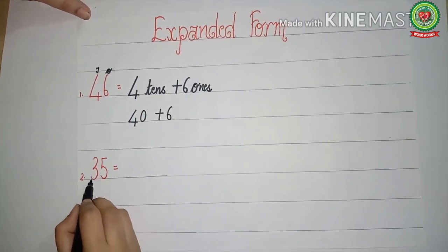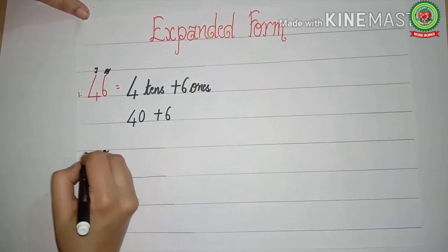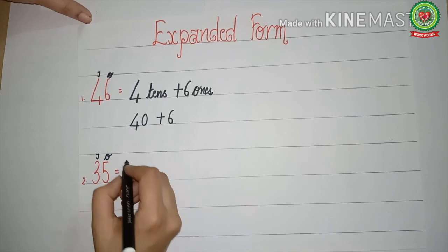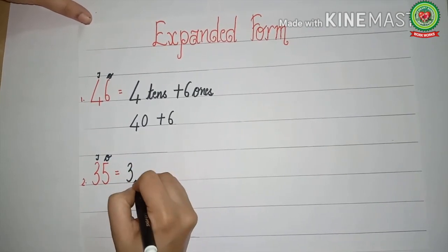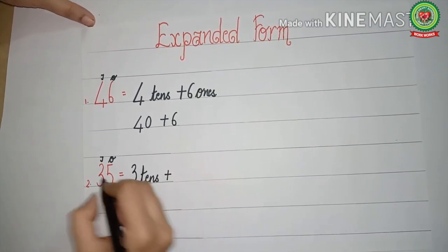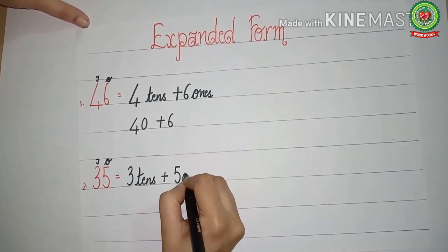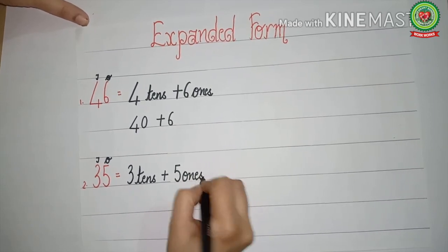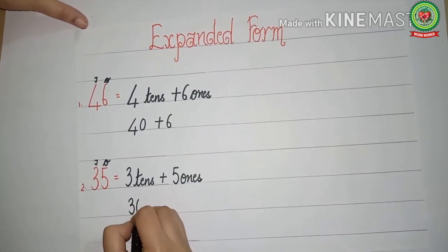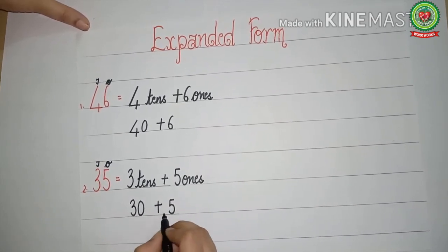Let us see another example: three, five — thirty-five. Again, we will write the place value chart first — ones and tens. What is written above three? Tens. So we write three tens plus five ones. Tens has one zero value, so we write thirty plus five.